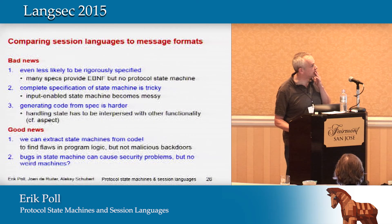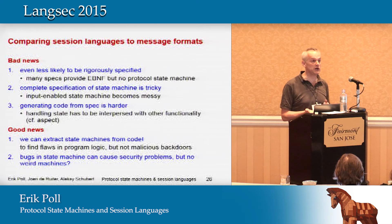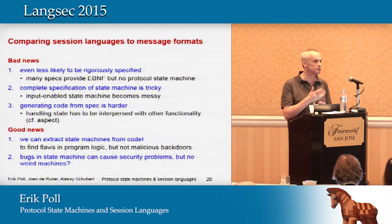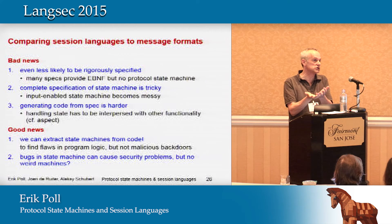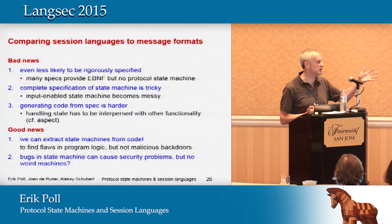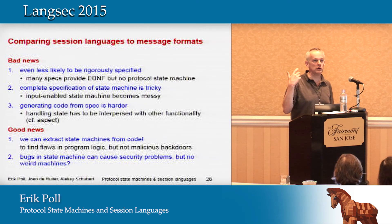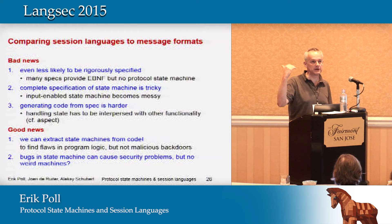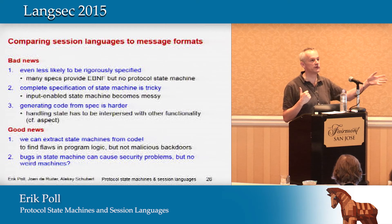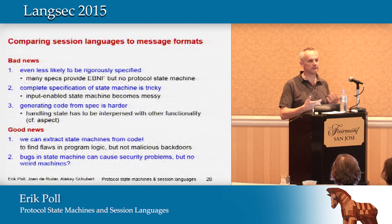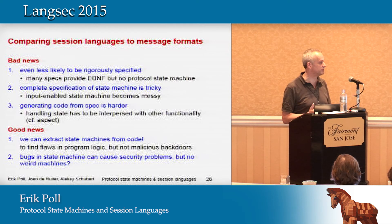The good news is that it's actually quite easy to extract state machines for a lot of existing protocols. With grammar learning, you can learn a lot of input alphabets, but I think it's even easier for state machines because in practice they're not quite as wild. If somebody makes a malicious backdoor in the code, you're not going to find it using state machine inference. But if there is an accidental flaw in the program logic, it will typically show up.